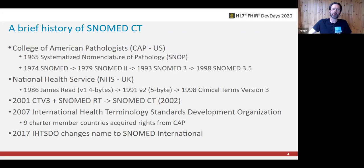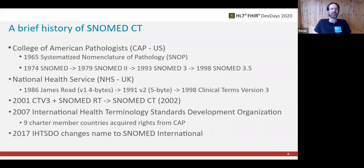Very quick history of SNOMED CT. It was formed as the amalgamation of two systems: SNOMED RT from the College of American Pathologists, and the Read coding system developed by James Read starting in 1986 by the NHS in the UK, which evolved into CTV3 around the time of SNOMED RT in 2001. At that time, the NHS and the CAP realized that maintaining the terminology is very time-consuming and expensive. So in 2007, nine charter member countries came together to bring the International Health Terminology Standards Development Organization into being and transfer the intellectual property and responsibility for SNOMED CT to that organization. In 2017, we changed the name to SNOMED International because nobody outside the organization could say IHTSDO, and today we're at 38 member countries.